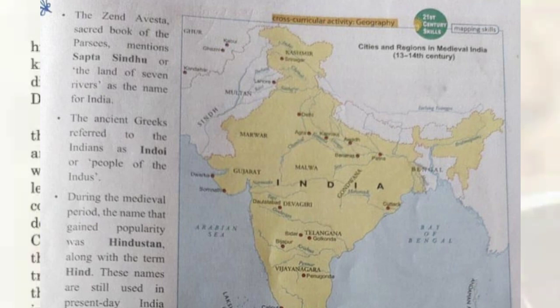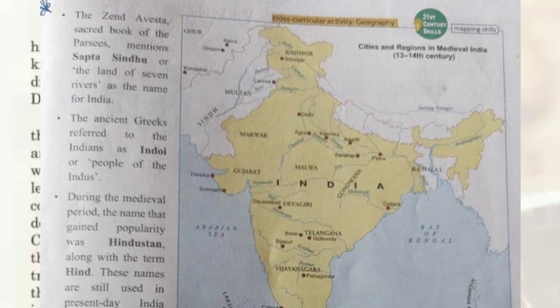In the early 16th century, Babur used the term Hindustan to describe the geography, the fauna and the culture of the inhabitants of the subcontinent. In the 19th century, Hindustan as used in English referred to the northern region of India, between the Indus and the Brahmaputra and between the Himalayas and the Vindhyas in particular. Hence, the term Hindustani was used for the Hindi-Urdu language. Today, these three terms are used interchangeably to refer to the political and national entity identified as India.